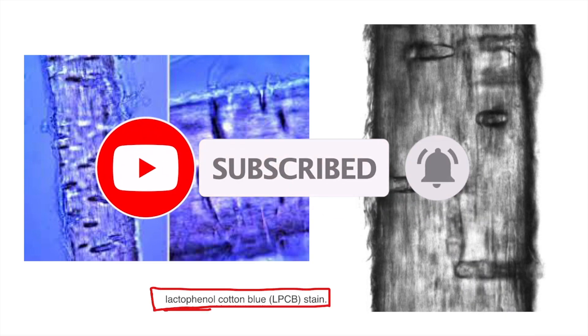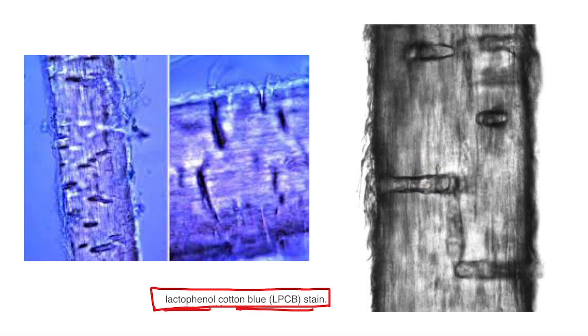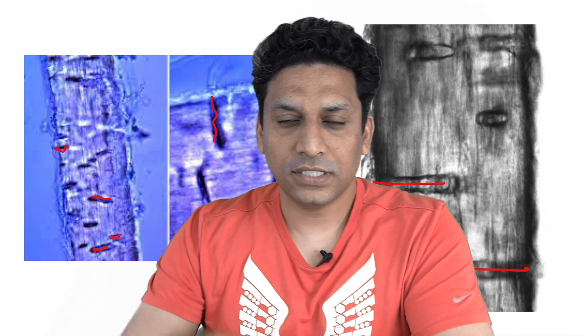We stain with lactophenol cotton blue and observe under the microscope. If the inoculated test fungus is Trichophyton mentagrophytes, you will find multiple erosions or perforations. These are the perforations as they look under the microscope. This is a positive hair perforation test; if such perforations are absent, it is a negative hair perforation test.